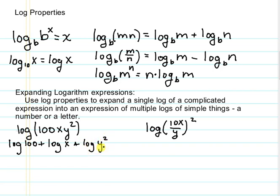On this last part we don't have a single letter here so we can use this third property here to bring the exponent from up here to be a multiplier in front. So now we have log of 100 plus log of x plus two times the log of y.